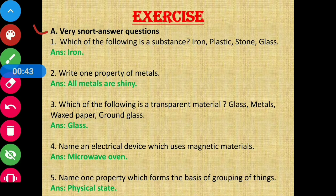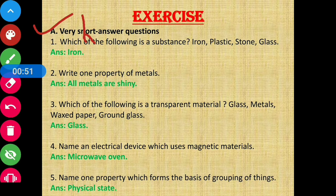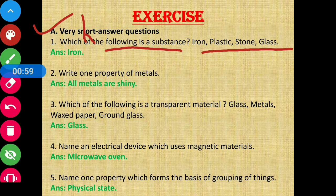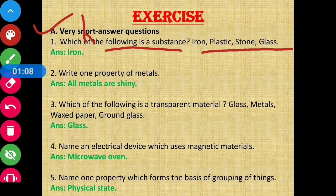Section A: Very Short Answer Questions. Question number 1: Which of the following is a substance — iron, plastic, stone, or glass? A substance is something in its pure form. So the answer is iron.